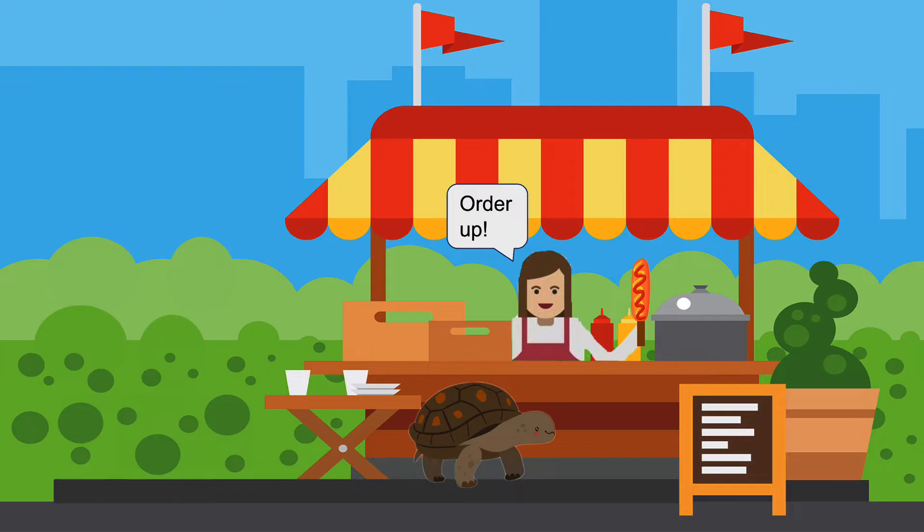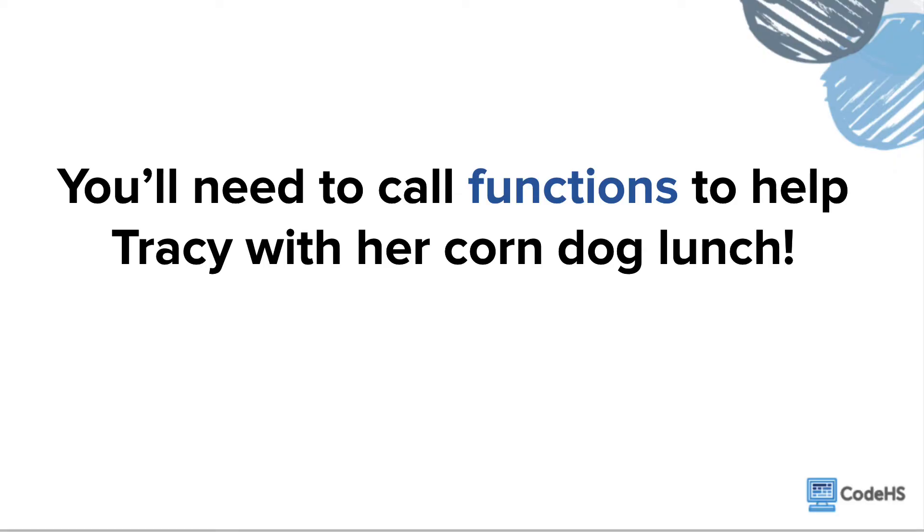The vendor pulls Tracy from her daydream with a corndog in her hand. Tracy hears her stomach rumble and can't wait to devour it! Before Tracy can eat her corndog, we need to learn about functions, which we can use to help Tracy with her corndog lunch.